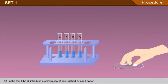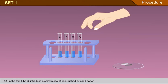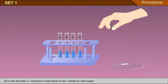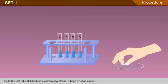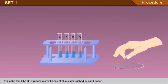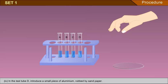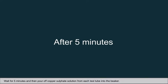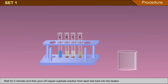In test tube B, introduce a small piece of iron rubbed by sandpaper. In test tube C, introduce a small piece of zinc rubbed by sandpaper. In test tube D, introduce a small piece of aluminium rubbed by sandpaper. Wait for 5 minutes and then pour off copper sulphate solution from each test tube into the beaker.